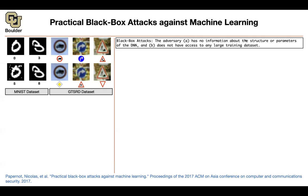The problem is even harder. Not only do you not know the architecture and parameters, you don't have access to any large training data set. Not only don't you know what data set they are using, you don't have the capacity to collect a lot of training data. So we are making the life of the adversary as hard as possible. Even in that case, there are ways to attack neural networks.